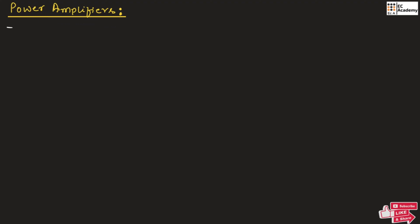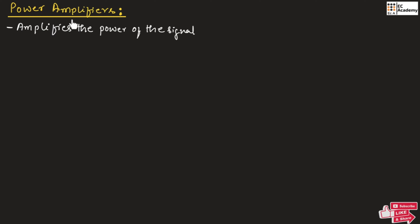Power amplifiers are electronic devices that amplify the power of a signal. They are designed to increase the power level of a signal. Based on their operation, we can classify power amplifiers as class A, class B, and class C power amplifiers. Now let us understand the operation of these amplifiers.